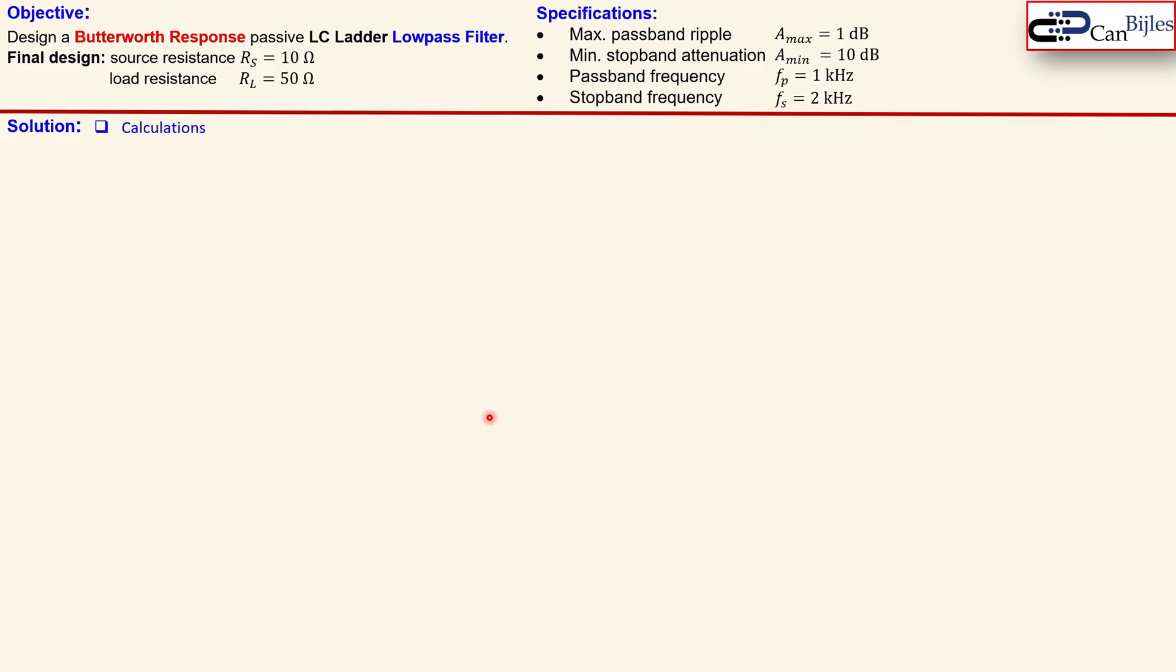First the calculations in our solutions. Step one, we always start with the filter order. In this case we use the maximum and minimum values here to determine the filter order n. So we go to the epsilon p from the A max using this formula, so we get 0.5088, and epsilon s for the stopband part you get in this case 3 exactly.